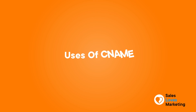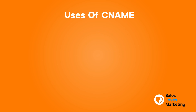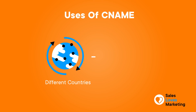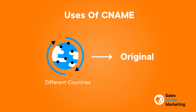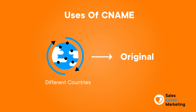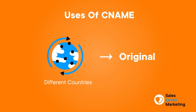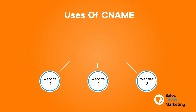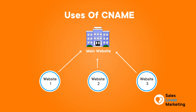CNAME records are used when: 1. Registering the same domain in different countries and pointing them to the original. 2. When directing from different websites owned by the same parent organization to a primary website.